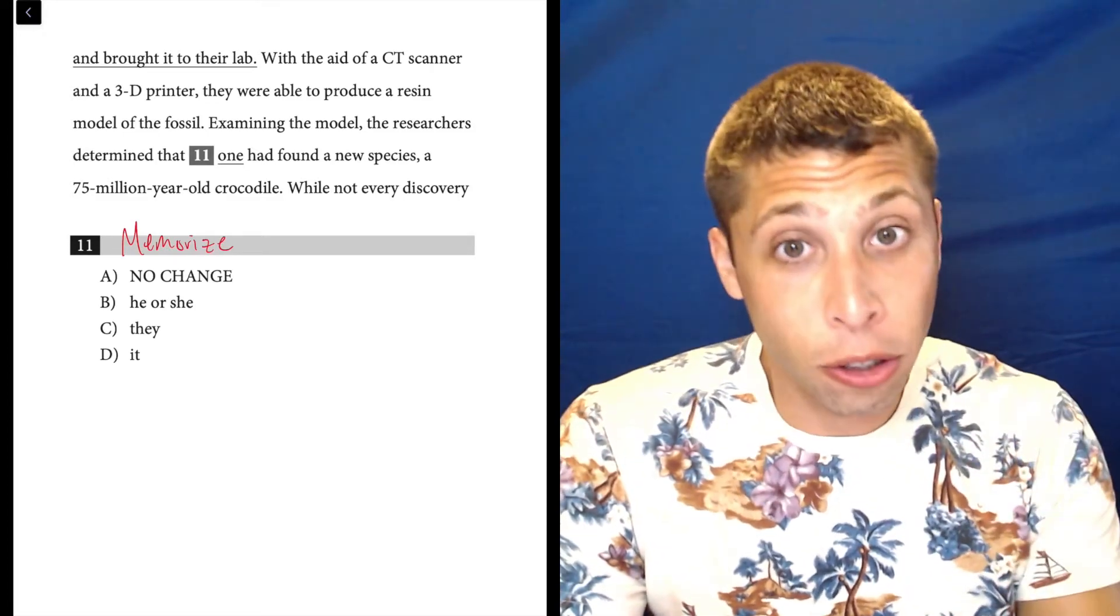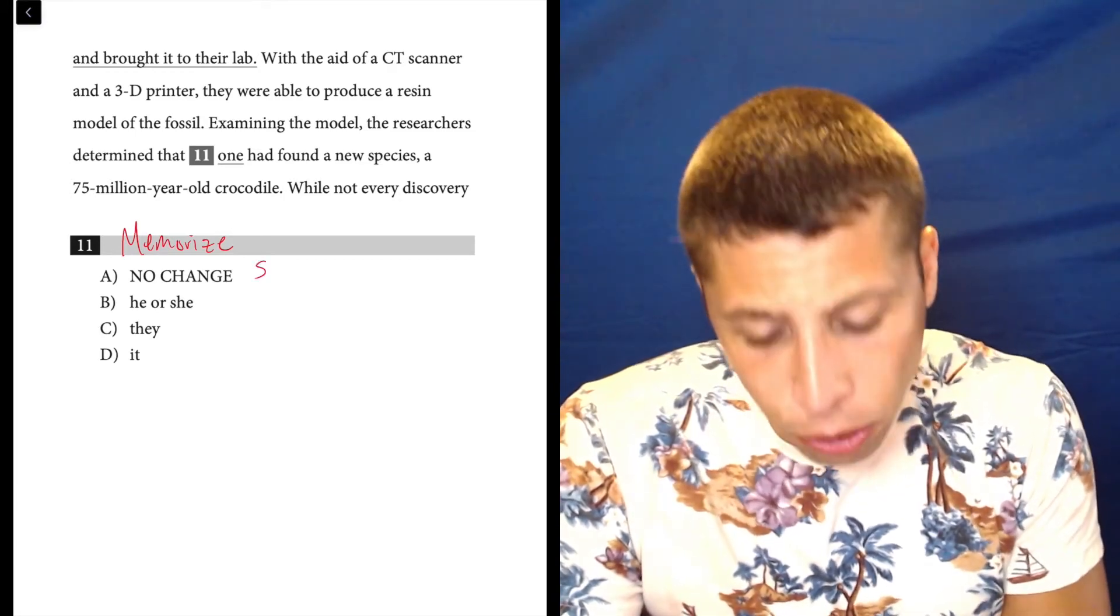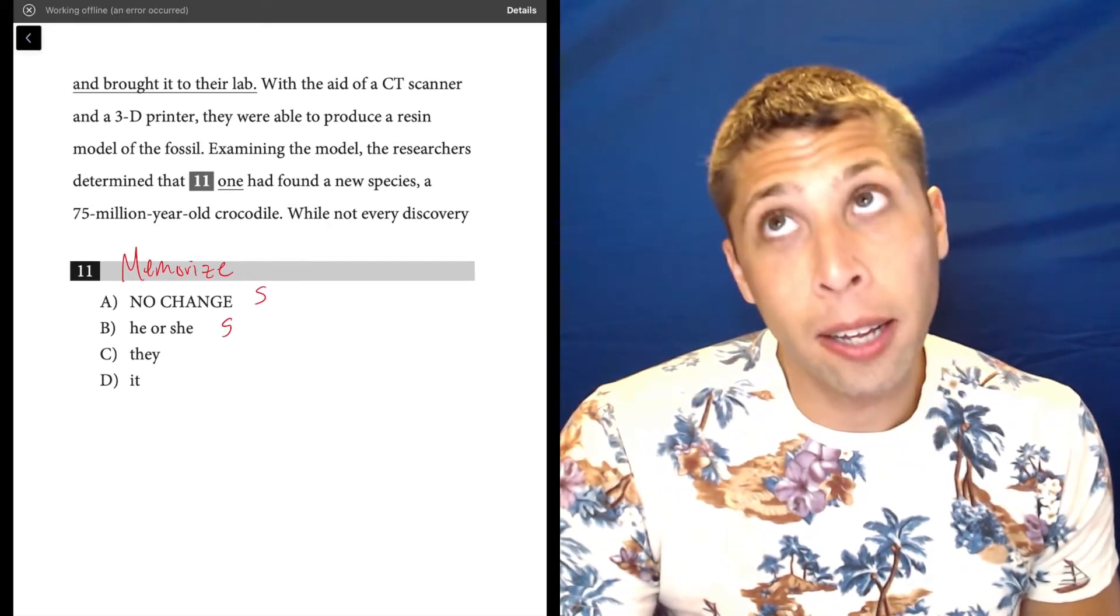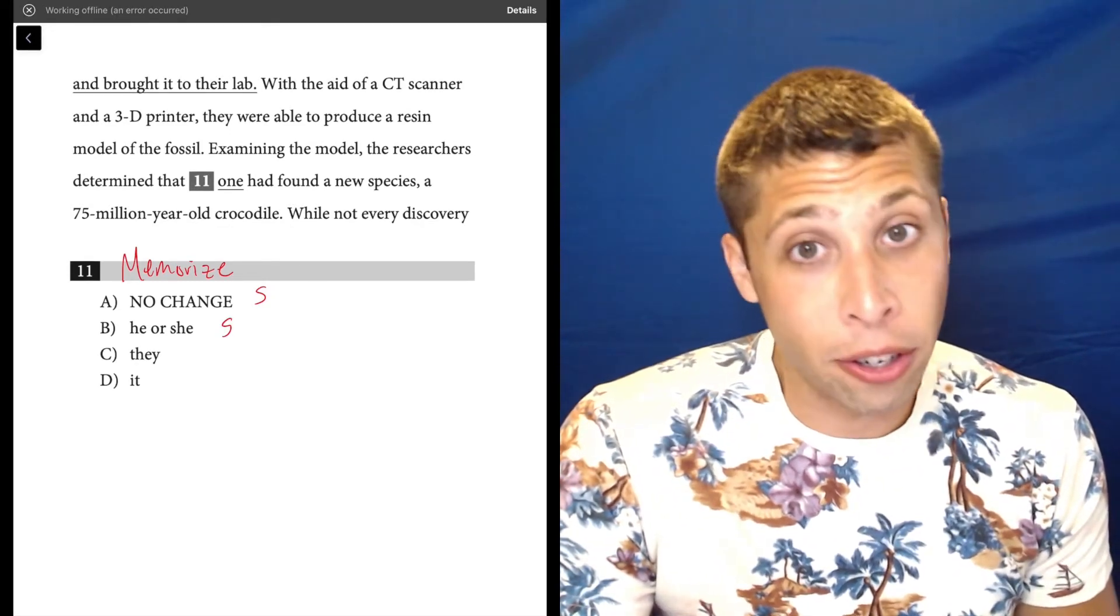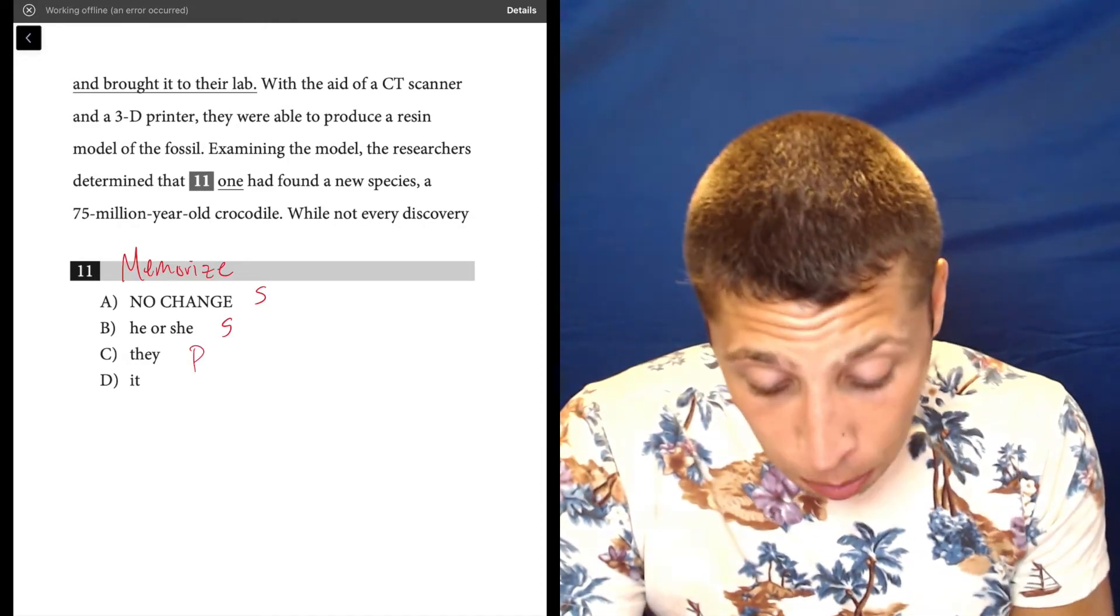We can look at these choices. One is singular, obviously singular. He or she is actually singular as well. We use it when we don't know the gender of the person that we're talking about, but it's still one person.